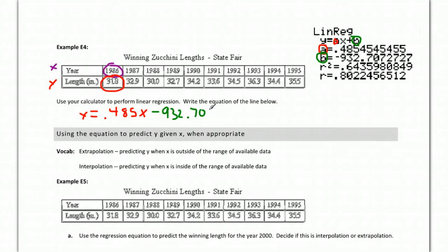It's really important that you don't round off too quickly on your slope here, because it's going to be multiplied by very large numbers, and that can really throw off your predictions if you round this too soon. So I would always go at least three decimals when you're dealing with this.